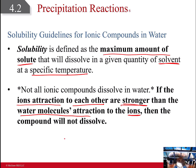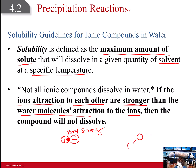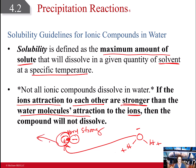If we have a positive and a negative ion as part of an ionic salt, and their attraction is very strong — so strong that the polar water molecule is not strong enough to pull it away — then it won't dissolve. It will not be hydrated and form a soluble solution.